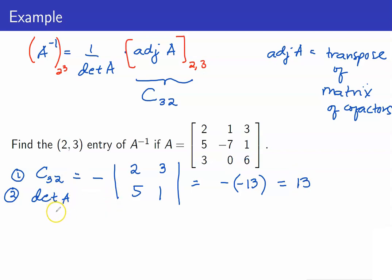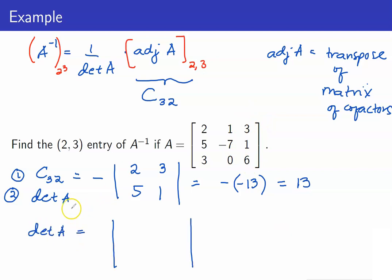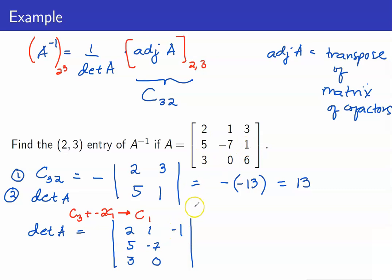Next, let us compute the determinant of A. I already have one 0 entry, so I want to turn another entry into 0 as well. I will use column operations — I don't want to disturb the second column — so I will replace column 3 with column 3 plus negative 2 times column 1. After this operation, the new third column entries become negative 1, 0, 0. I will now get the cofactor expansion along the third column, so this is 3 times positive 1 times the determinant of the remaining 2×2 matrix with entries 1, negative 1, negative 7, negative 9.